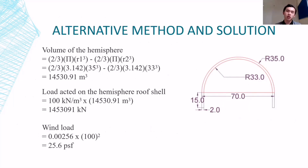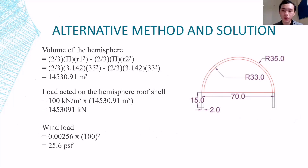If we want to know the load of the hemispherical roof shell, we assume the weight density is 100 kN per meter cube. We need to calculate the volume of the hemisphere using the formula 2/3 π times radius cubed. With the outer radius 35 and inner radius 33, we substitute both radii into the formula and get a volume of 1.45 × 10⁴ m³. We then multiply by the density to get the load, which is 1.45 × 10⁶ kN.